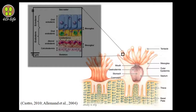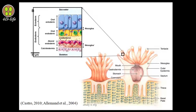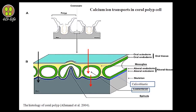The epithelial layer consists of two sections: the aboral and oral parts. In both the aboral and oral parts, we have two layers called the ectoderm and endoderm, which are separated by a network of collagen called mesoglea. The aboral ectoderm is known as the calicoblastic layer, and it is responsible for the formation of the skeleton.